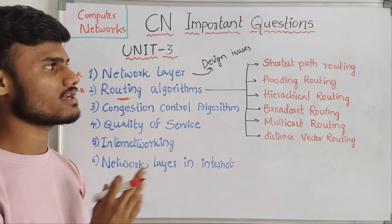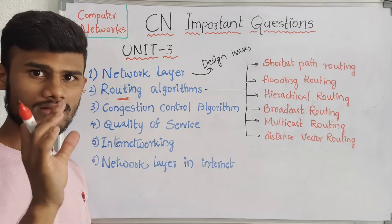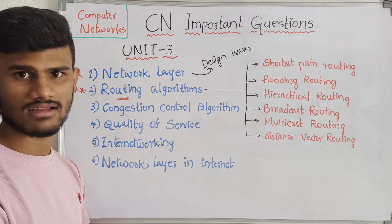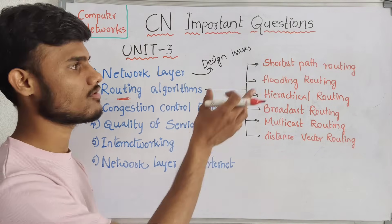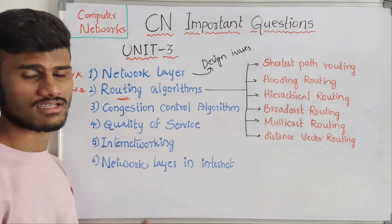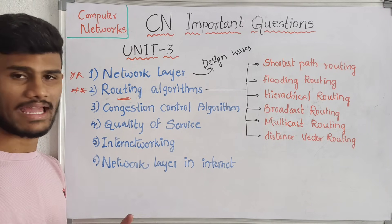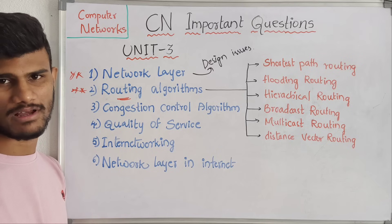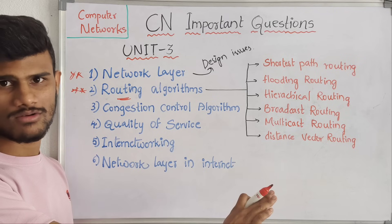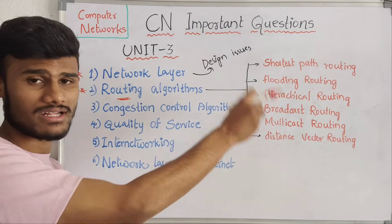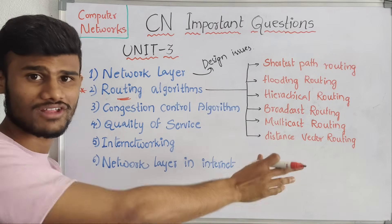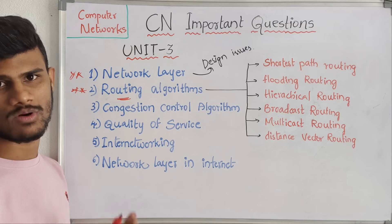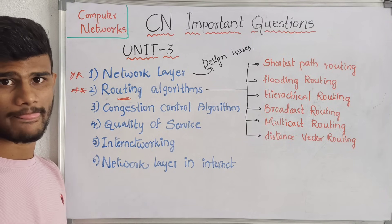Then next we have a very important question — routing algorithms. What is meant by routing? Explain the types of routing algorithms. We have to explain six types of routing individually. The key point is to use the routing algorithm definition and diagram. The examiner checks only the diagram, the definition, and the side headings — the main diagram, definition, and small concept headings.